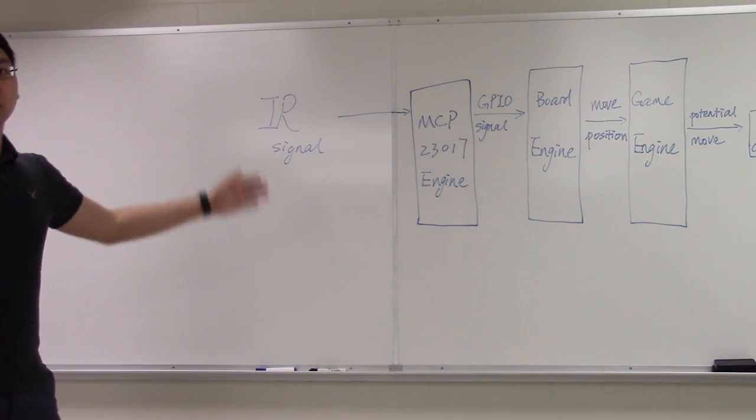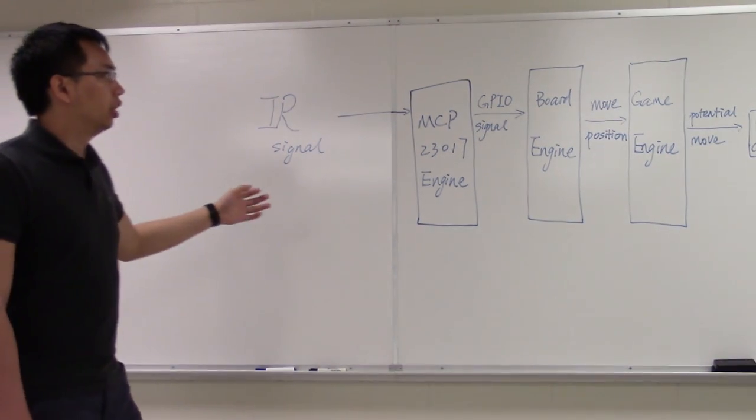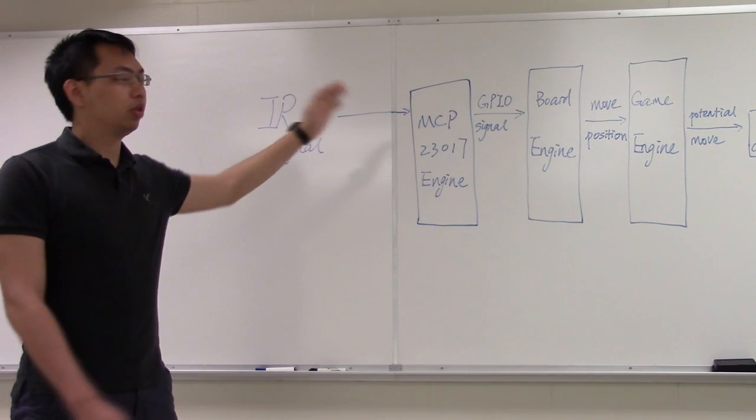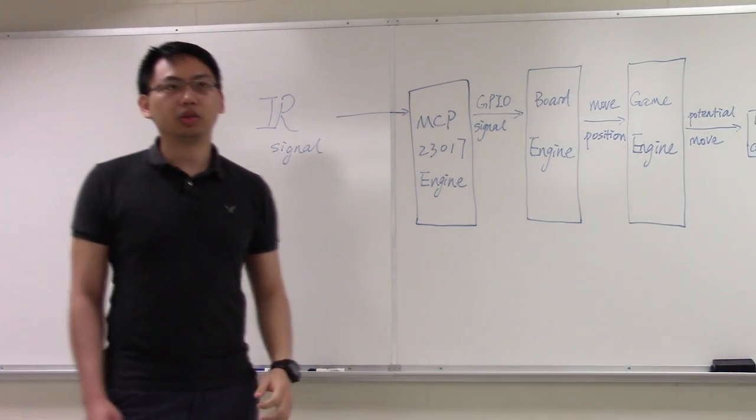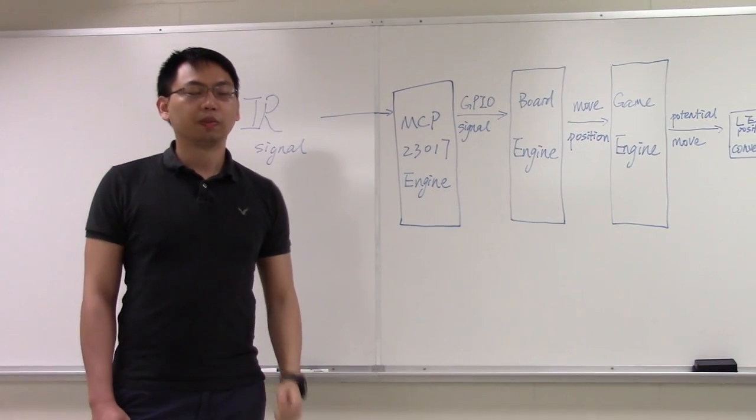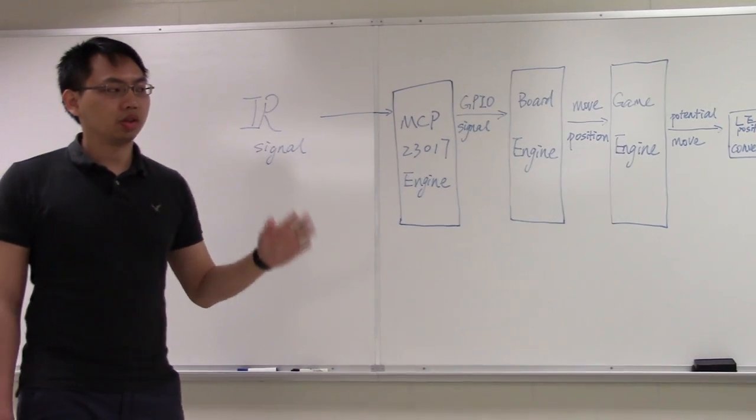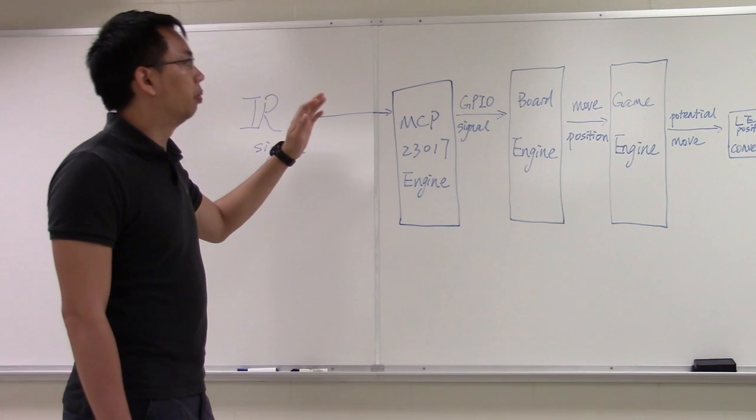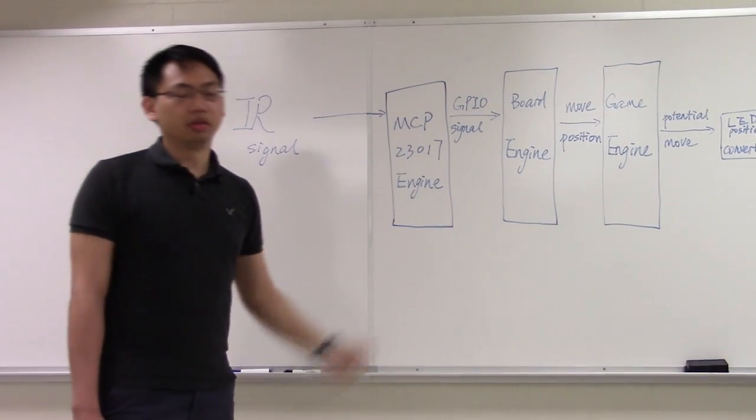The MCP engine will receive the signal from the IR sensor and then output the GPIO signal of that chip to the board engine. The board engine will use the GPIO signal to identify which position on the board has been moved and then pass the move position to the game engine.